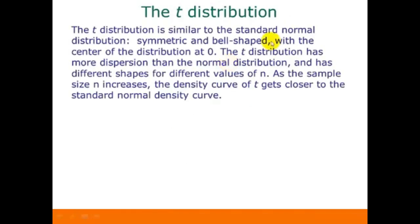The t-distribution has some specific characteristics. It's similar to the standard normal distribution — symmetric and bell-shaped with the center of the distribution at zero. The t-distribution has more dispersion than the normal distribution and has different shapes for different values of n. The t-distribution is always centered at zero, and as the sample size n increases, the density curve for t gets closer to the standard normal density curve. In other words, for bigger sample sizes, the t-distribution looks more and more like the standard normal distribution.